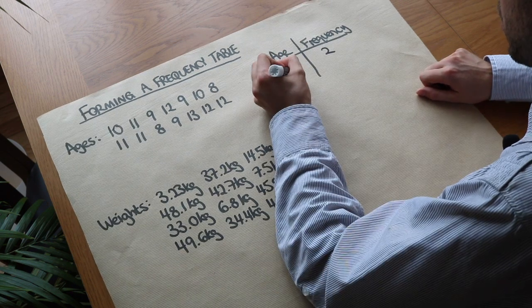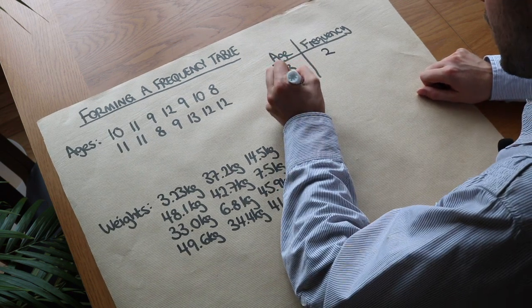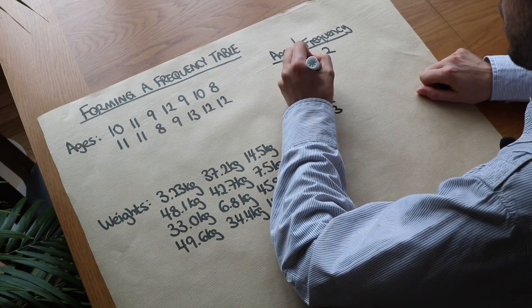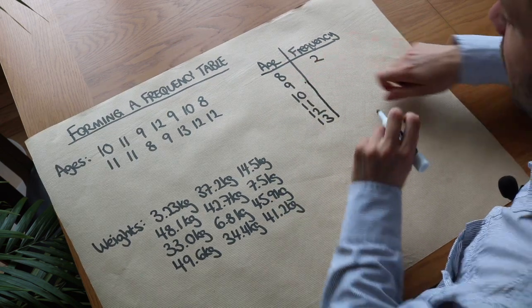And then we might list the other ages here so we've got nine, ten, eleven, twelve, and thirteen. So we just have to count how many times each age occurs.